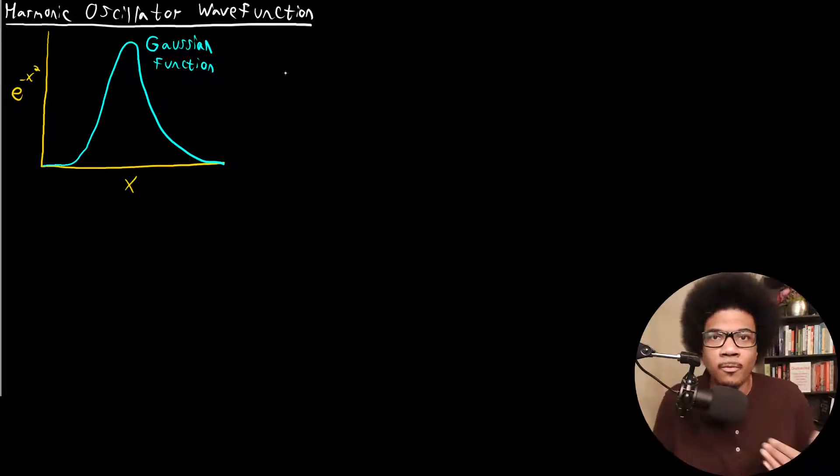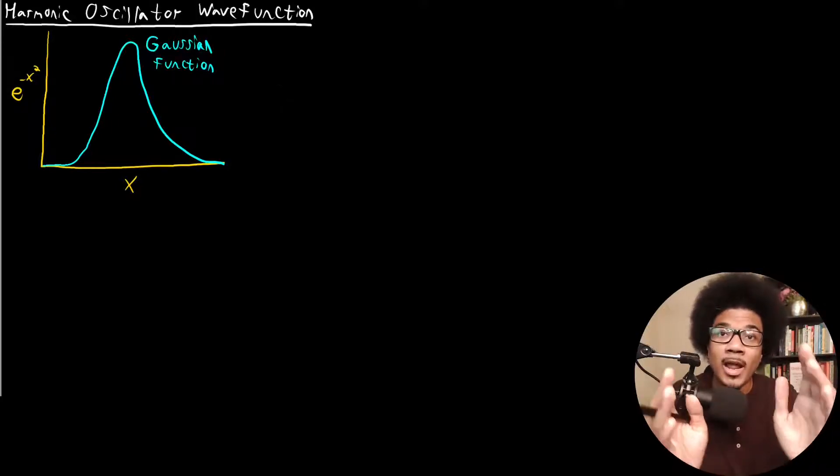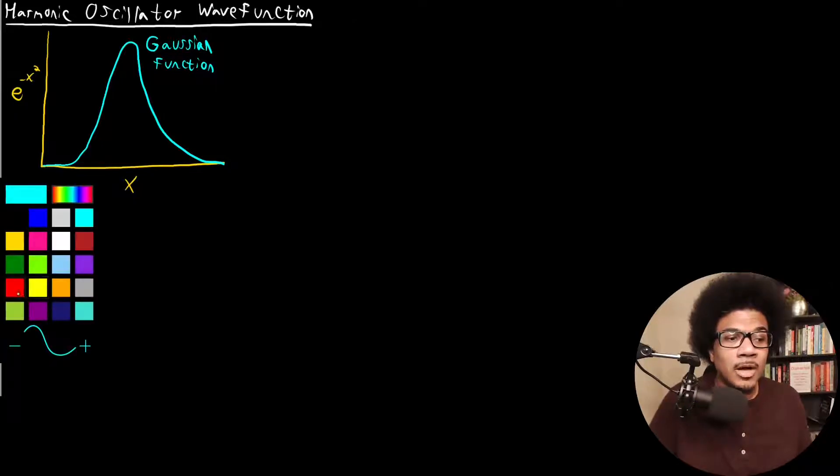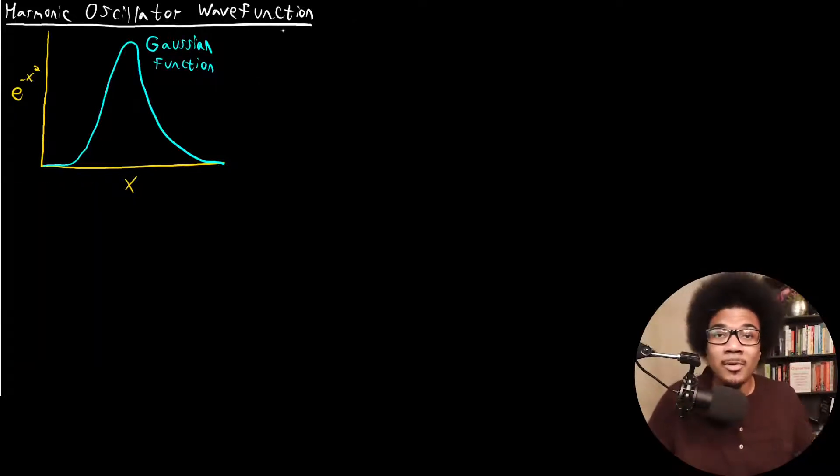So for the harmonic oscillator, we looked at it—its potential was a parabola, a parabolic well, and that went to infinity at the edges of the well. So as a result of that physical form of the potential, there's actually only one boundary condition that we need for the harmonic oscillator wave function. And that is that the wave function at infinity, plus or minus infinity, must be equal to zero.